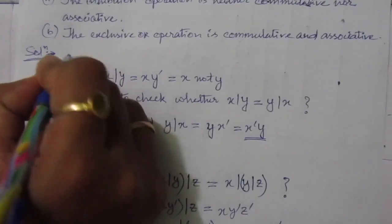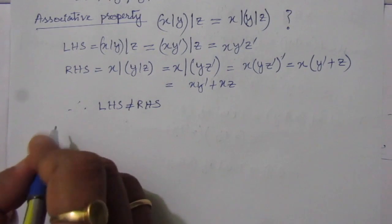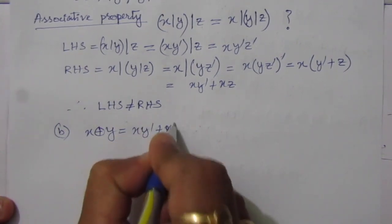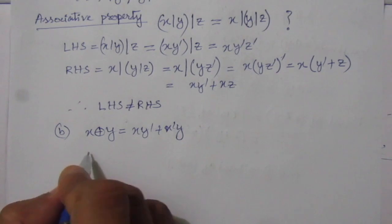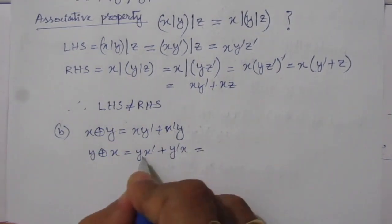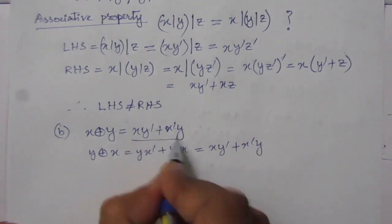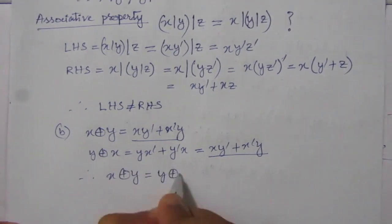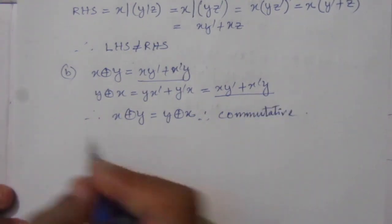The second part of the problem: we will check whether the exclusive-OR (XOR) operation is commutative or associative. x XOR y equals x·y̅ + x̅·y. To check commutativity, we find y XOR x equals y·x̅ + y̅·x, which is the same as x·y̅ + x̅·y. So x XOR y equals y XOR x, therefore the XOR operation is commutative.